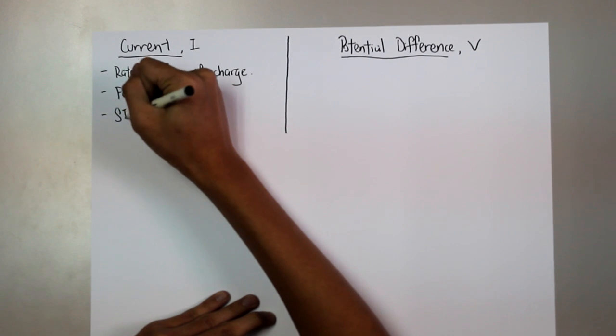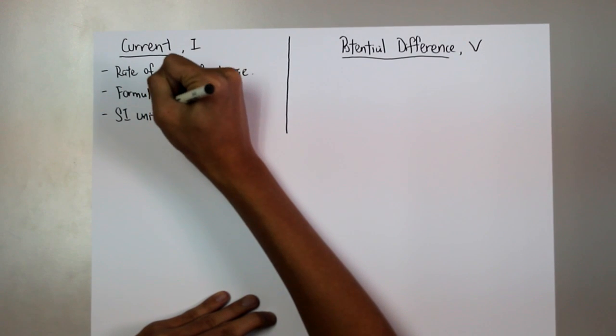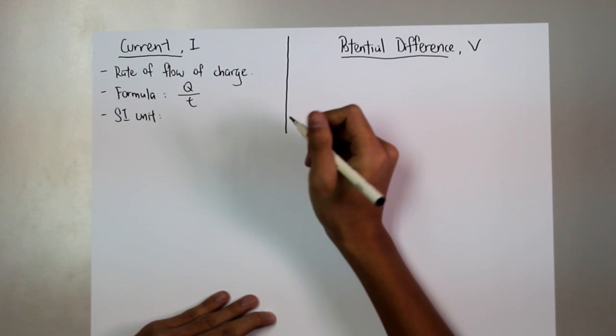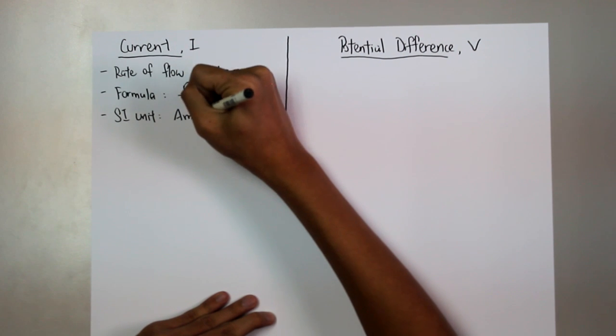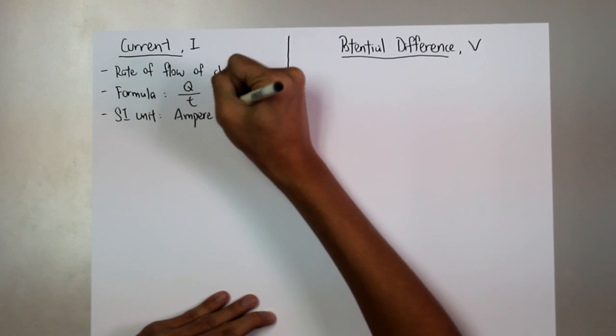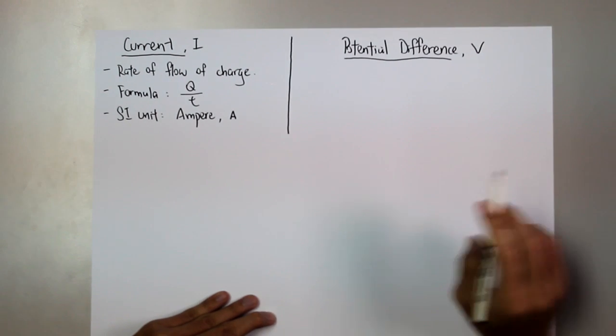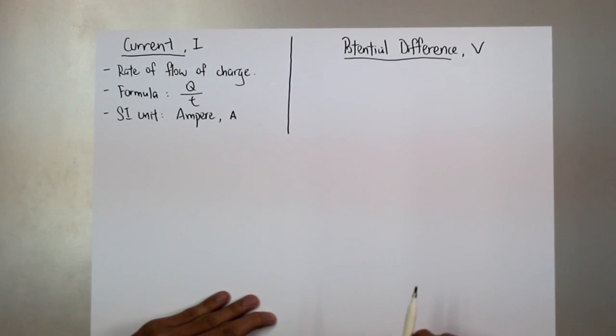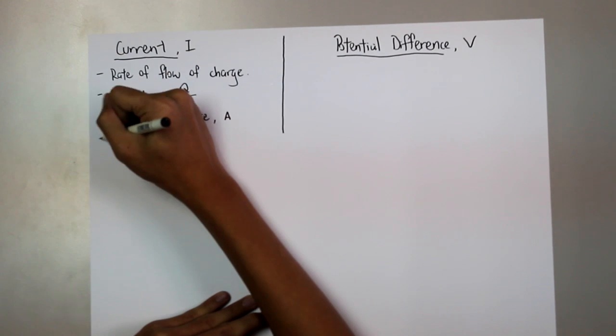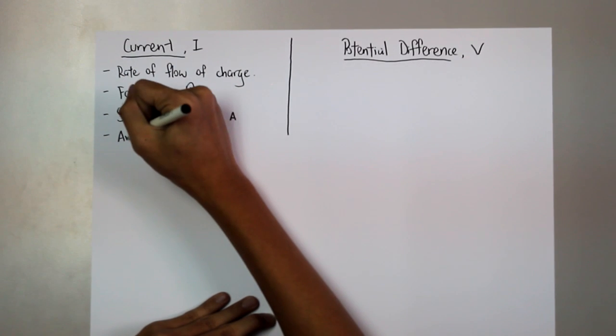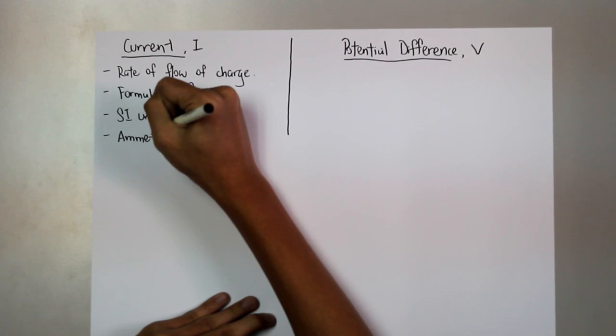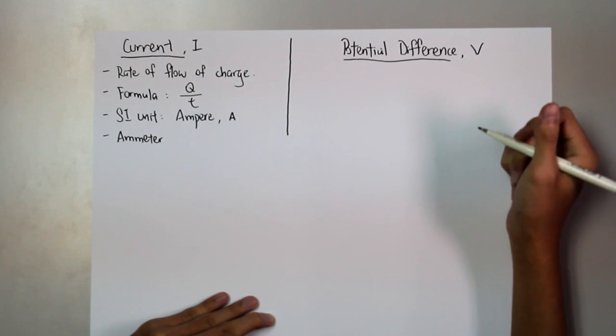The SI unit for current, we call it ampere, which is represented by the capital letter A. And we use ampere to measure current.